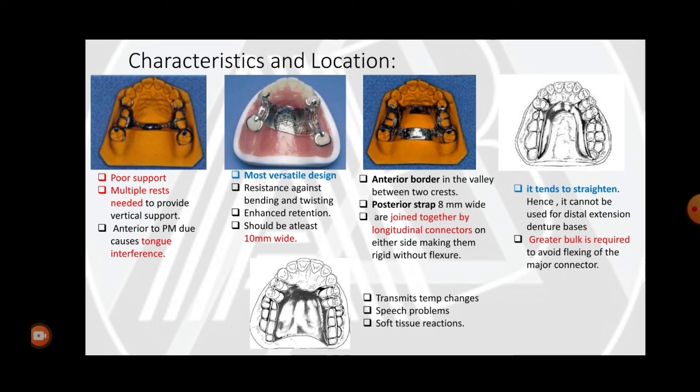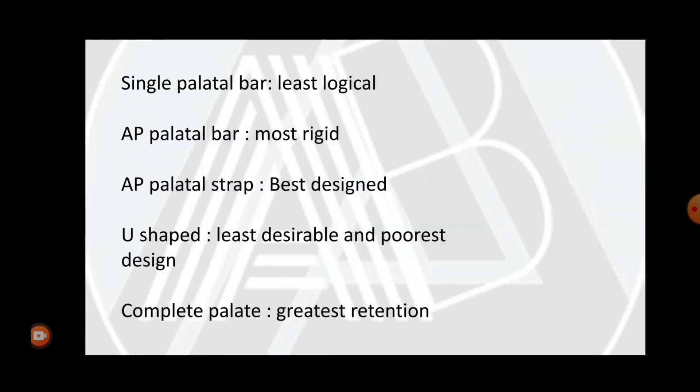The complete palatal plate type transmits temperature changes due to its extensive palatal coverage. It usually causes speech problems initially when the patient starts using the prosthesis, and the extensive palatal tissue coverage may sometimes cause soft tissue reactions.